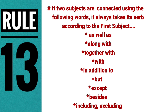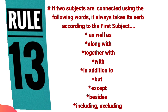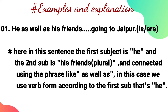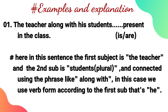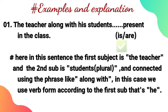The thirteenth rule: when two subjects are connected using expressions like 'as well as,' 'along with,' 'together with,' 'with,' 'in addition to,' 'but,' 'except,' 'besides,' 'including,' or 'excluding,' the verb always agrees with the first subject. For example: 'He as well as his friends is going to the shop' — verb agrees with 'he.' 'The teacher along with his students is present in the class' — verb agrees with 'the teacher.'